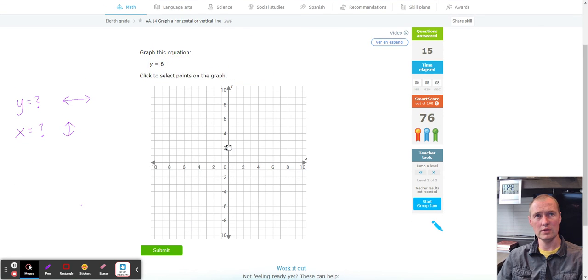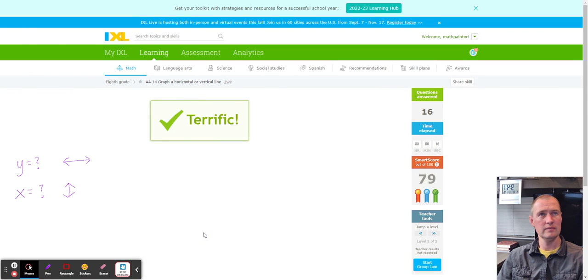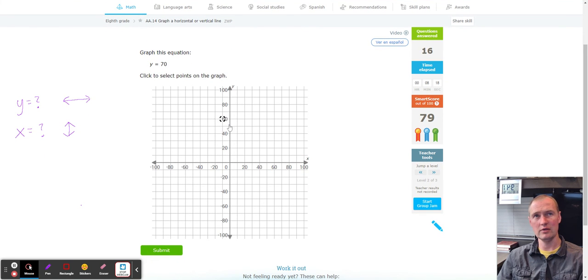And Y equals eight, one, two, three, four, five, six, seven, and eight. Make it horizontal. Again, it doesn't matter where you click as long as it's flat. And last but not least, Y equals 70 by 10s, 10, 20, 30, 40, 50, 60, 70. Make it flat.